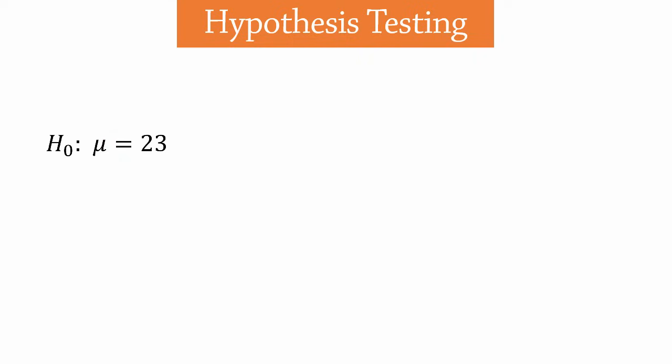The complement or opposite of the null hypothesis is the alternative hypothesis, represented by HA or H1. In this case, the alternative would be that the mean is not equal to 23. We use this hypothesis for two tail tests because the alternative basically means that the mean could be less or greater than 23.